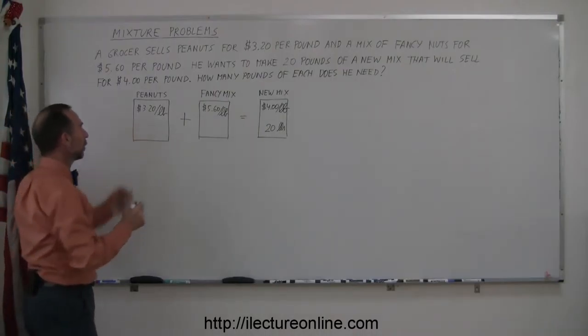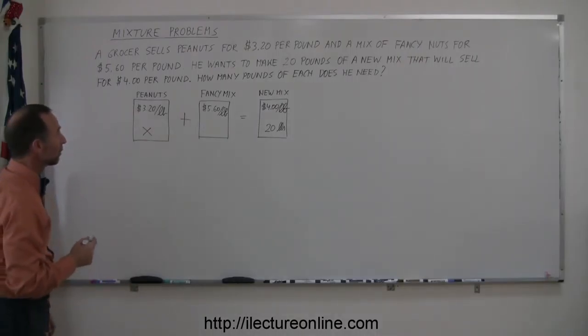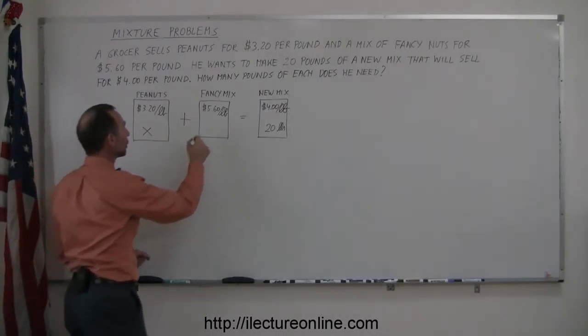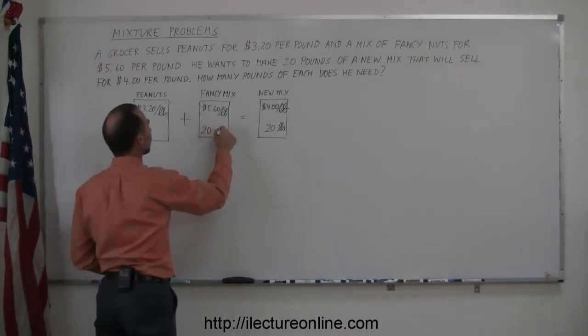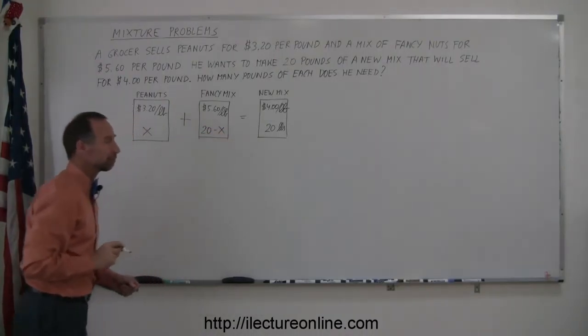How many pounds do we need of the peanuts? We don't know. Let's call it X. And the remainder will have to be made up from the fancy mix, so the total, 20 minus X, will give us the number of pounds for the fancy mix.